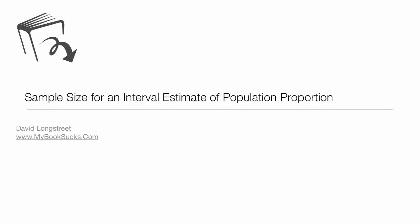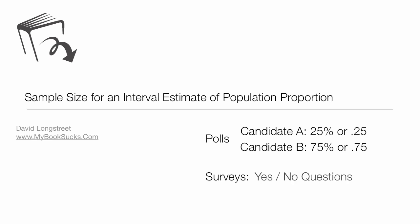In this tutorial, I'm going to talk about the sample size for an interval estimate of a population proportion. You'll see this used for polls like candidate A, 25% or 0.25, candidate B, 75% or 0.75. It's also used in surveys as well.